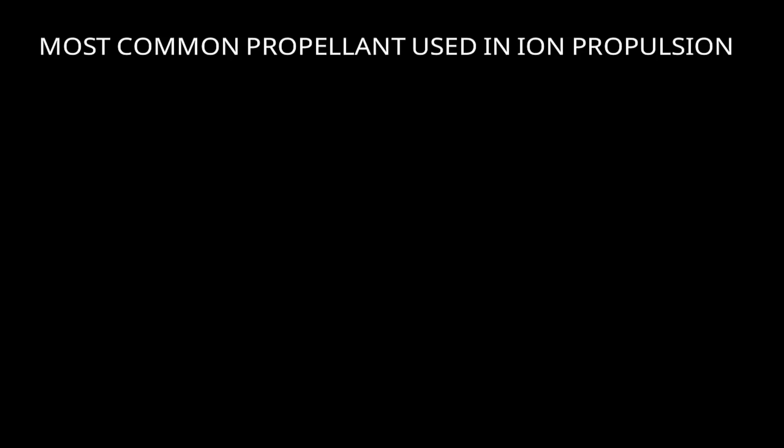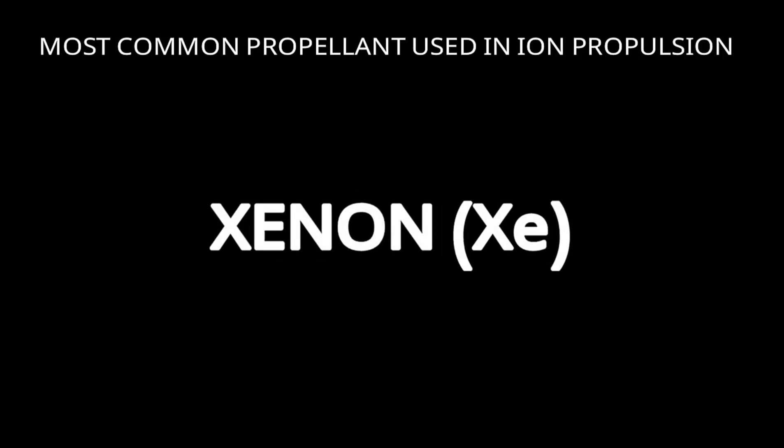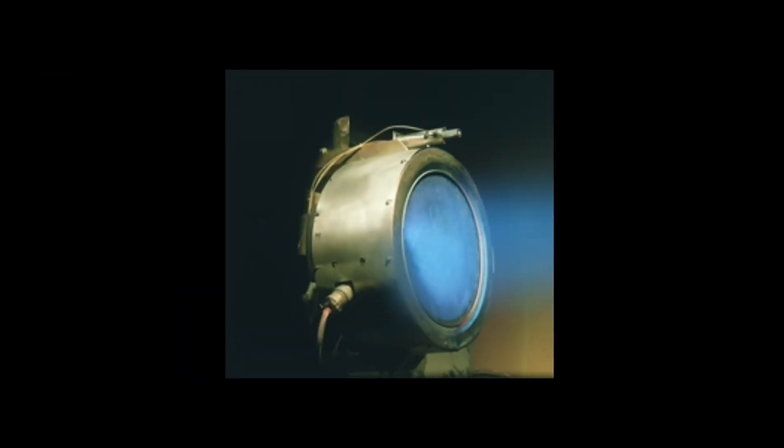The most common propellant used in ion propulsion is xenon, which is easily ionized and has high atomic mass, which helps to generate a desirable level of thrust when ions are accelerated.